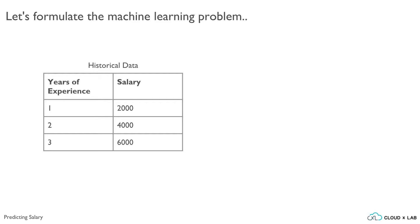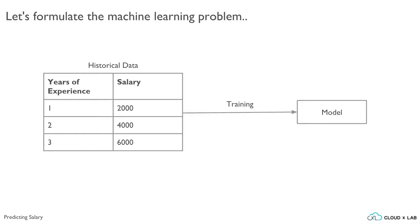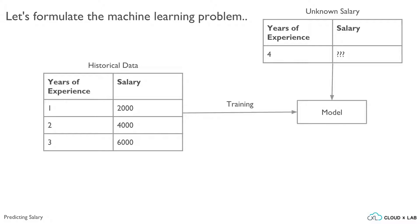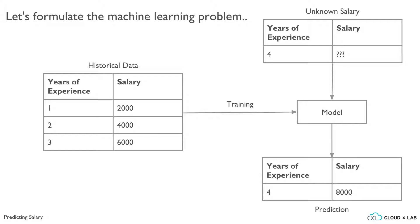Let us convert this problem into instances, features, and labels and see how to make the computers solve this problem. In our case, there is one feature — years of experience. In real life, there could be multiple features such as the area of expertise, the location, etc. And there is one target or label — salary. We would want to train a model such that the model can predict the salary for the fourth year. Here, the model has predicted the salary for four years of experience as 8000.